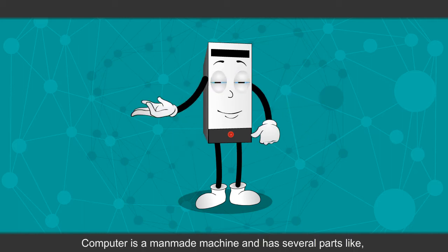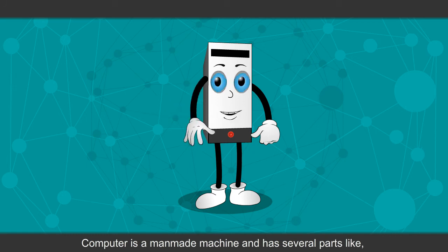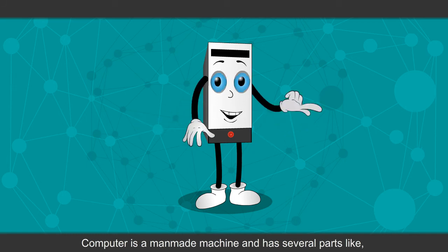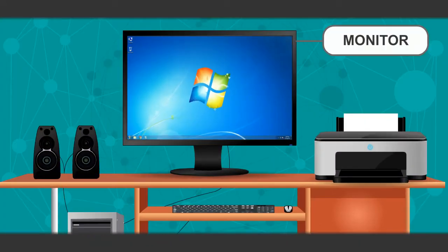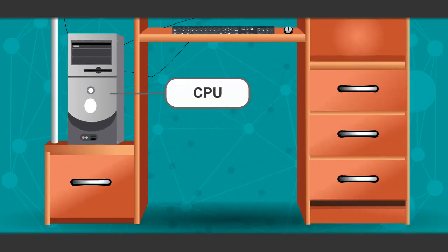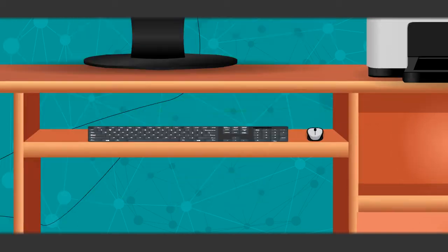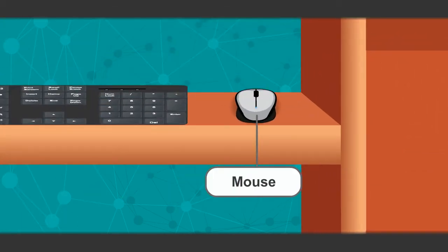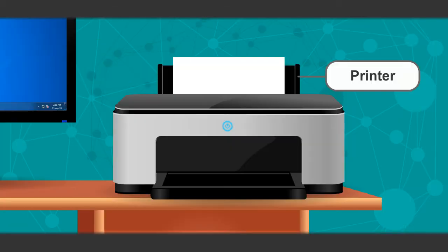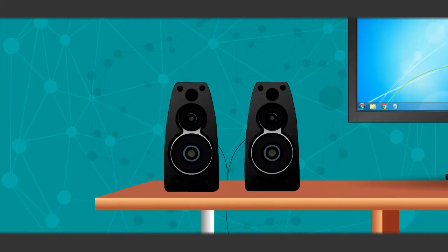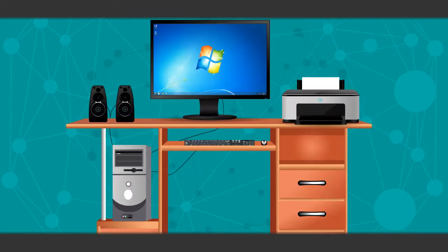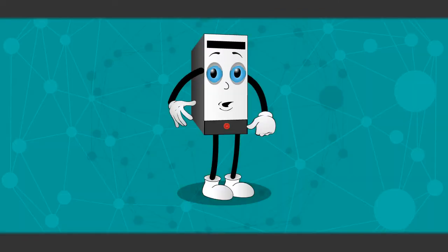Computer is a man-made machine and has several parts, like monitor, CPU, keyboard, mouse, printer, speaker. Let's discuss one by one.